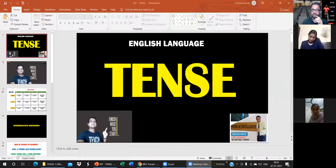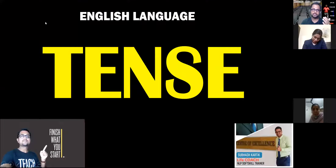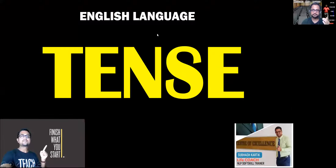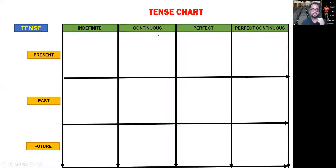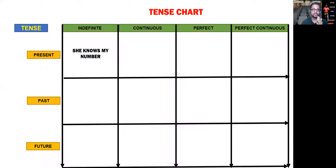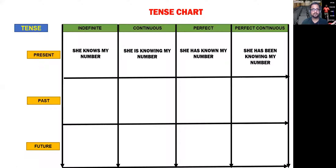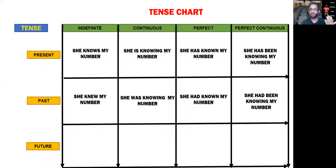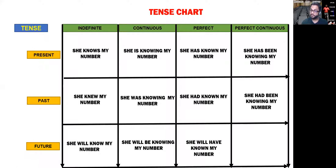So, जैसा कि हम लोग already tense को follow कर रहे हैं, आज भी tense को follow करते हुए हम interrogative sentence सीखेंगे। जैसा कि tense chart तो अभी आप लोगों की ज़बान में ज़रूर होगा — she knows my number, she is knowing my number, she has known my number, she has been knowing my number, she knew my number, she was knowing my number, she had known my number, she had been knowing my number, she will know my number, she will be knowing my number, she will have known my number, she will have been knowing my number — यह तो हमने already practice कर लिया है।